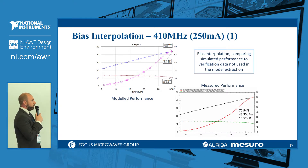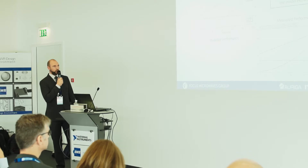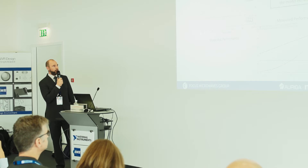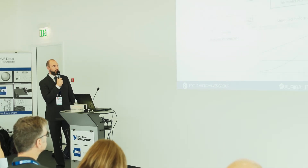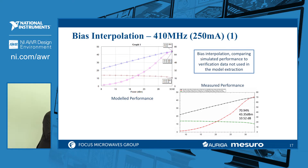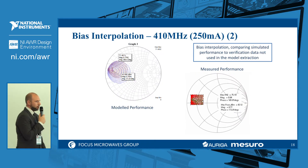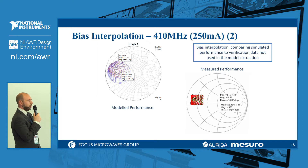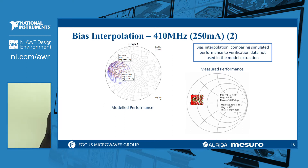For the 250 milliamp interpolation example, it again works very well in all three cases — gain, output power, and efficiency. The curve shape is the same and the numbers are quite similar. In the impedance space, we have very good match in maximum output power; power added efficiency is slightly off but quite good.